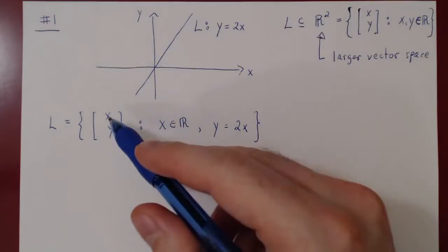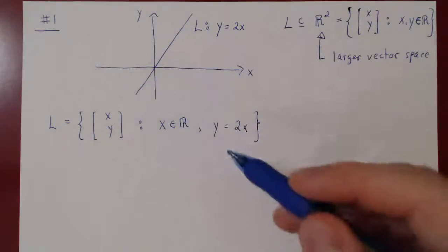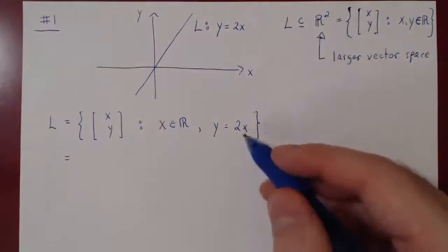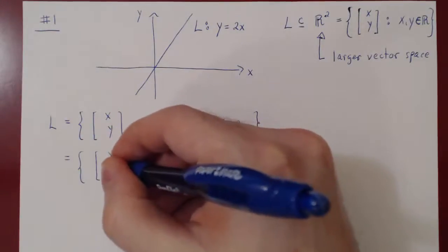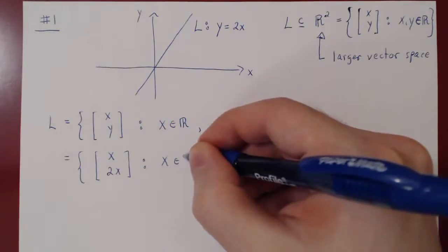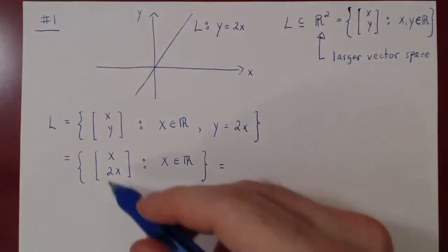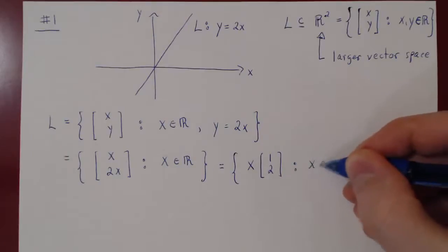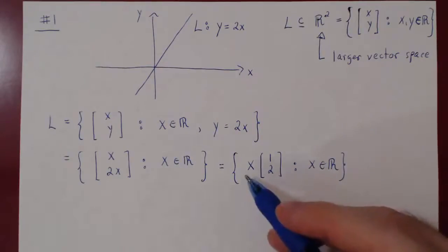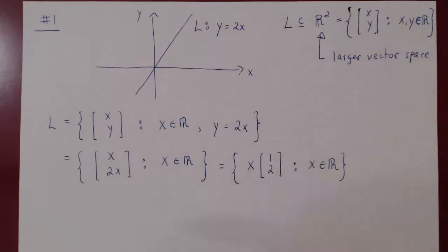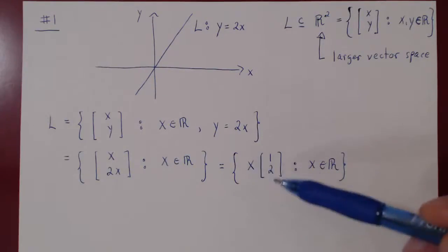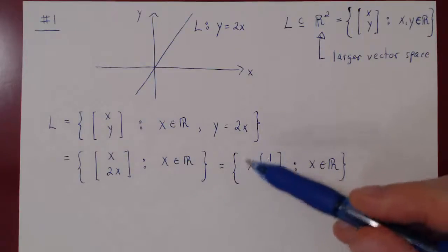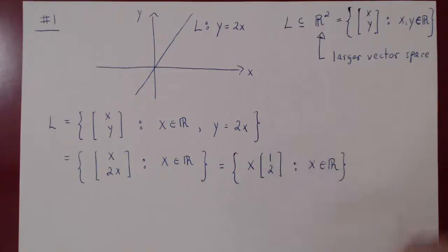That's our line — the set of points (x, y) where x can be any real number, but the y-coordinate has to be 2 times the x-coordinate. We can replace y by 2x, and factor out x as a scalar multiple to get x times the vector [1, 2]. Since x is allowed to range over all real numbers, the line consists of all possible real multiples of the vector [1, 2]. This is by definition the span of vector [1, 2].